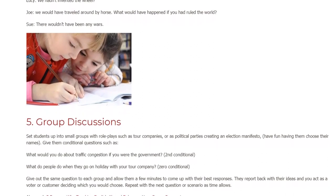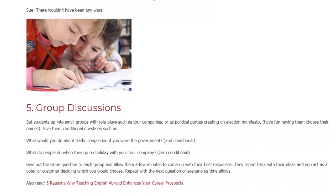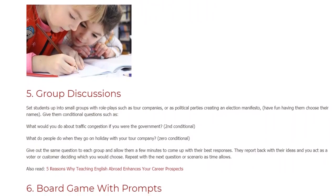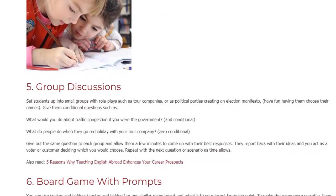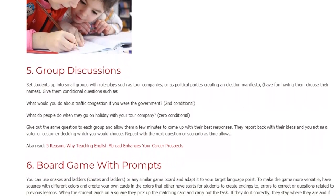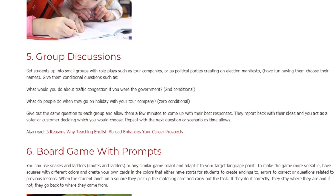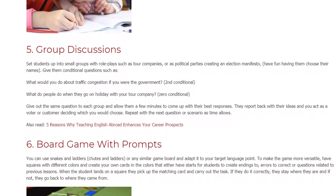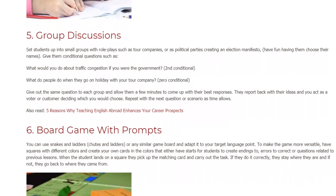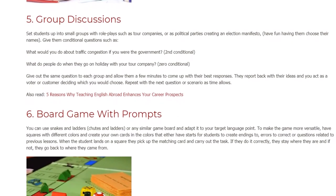5. Group Discussions. Set students up into small groups with role plays such as tour companies, or as political parties creating an election manifesto — have fun having them choose their names. Give them conditional questions such as: 'What would you do about traffic congestion if you were the government?' (Second conditional.) 'What do people do when they go on holiday with your tour company?' (Zero conditional.) Give out the same question to each group and allow them a few minutes to come up with their best responses. They report back with their ideas and you act as a voter or customer deciding which you would choose. Repeat with the next question or scenario as time allows.